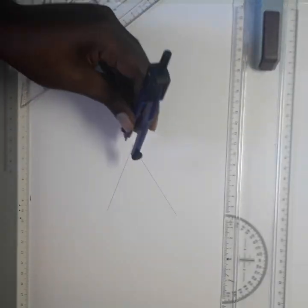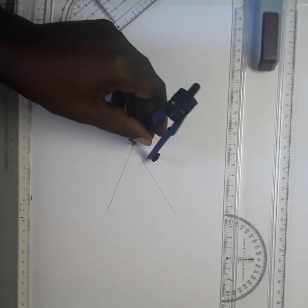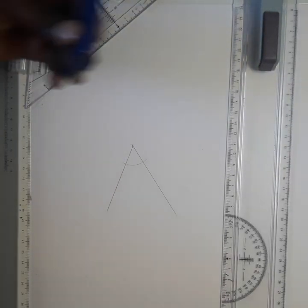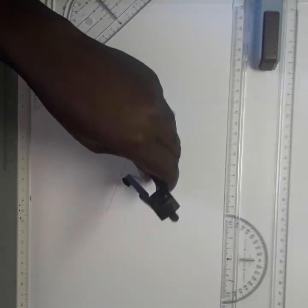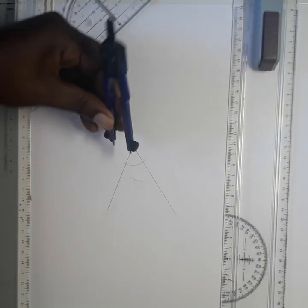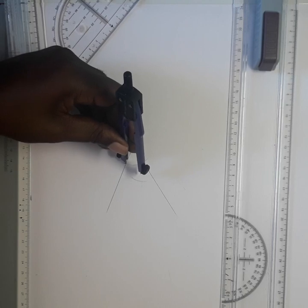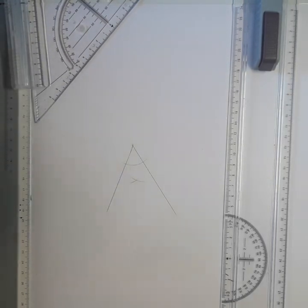Then you put your compass here by the corner and make an arc. With the same radius, put the compass here and make an arc. Come to this side, put the compass there and make an arc.